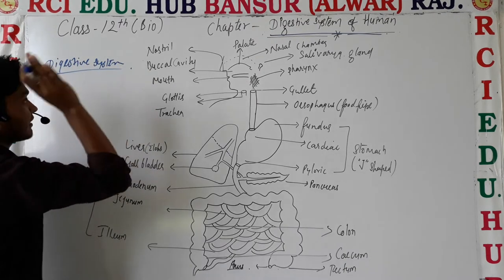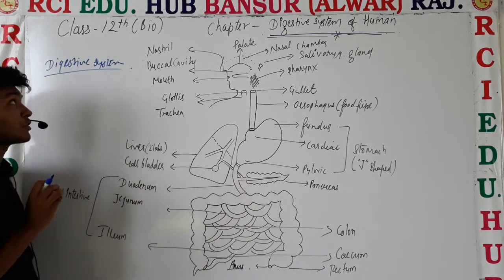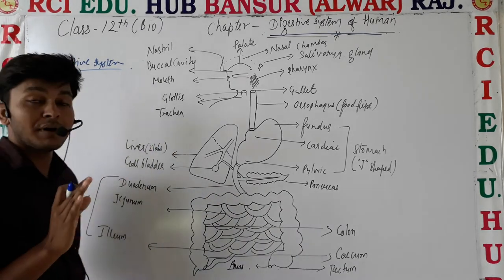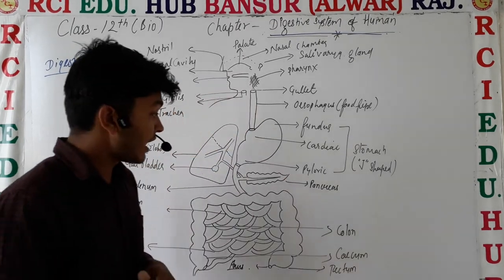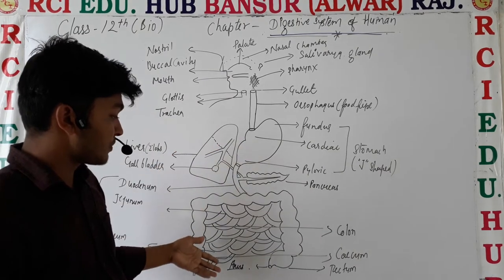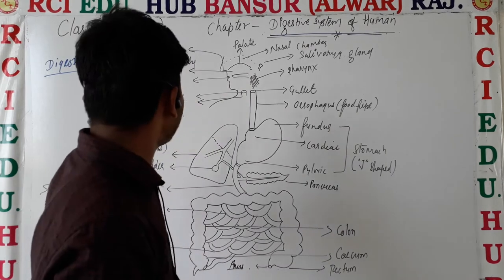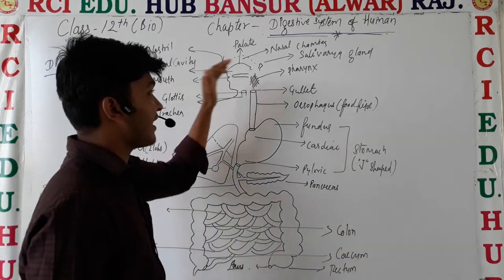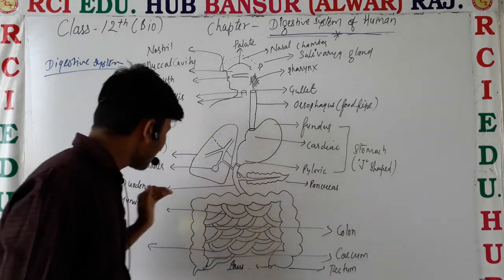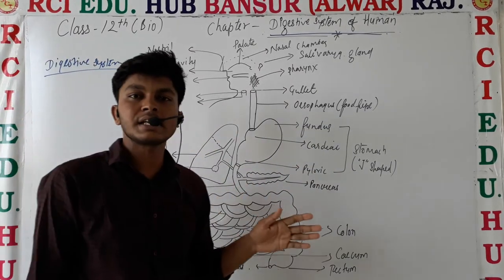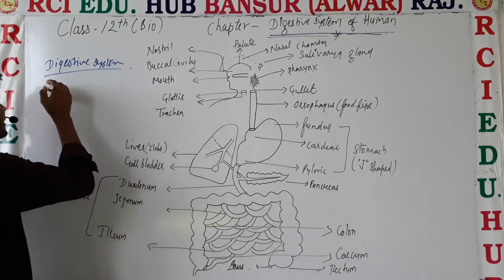We will see what happens in the digestive system, what types of organs are found in it. In the digestive system we are going to know all about the buccal cavity, pharynx, salivary gland, esophagus, stomach, pancreas, small intestine, and large intestine. After this we will see the steps of nutrition.